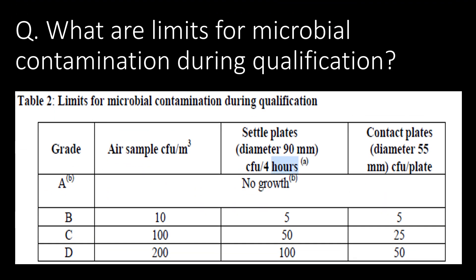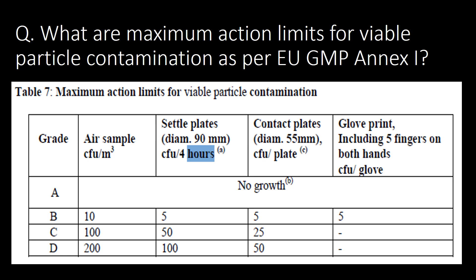What are the limits for microbial contamination during area qualification? You can refer to the table below from EU GMP Annex 1 for limits for microbial contamination during area qualification. What are the maximum action limits for viable particle contamination as per EU GMP Annex 1? You can refer to the table below for maximum action limits for viable particle contamination as per EU GMP Annex 1.